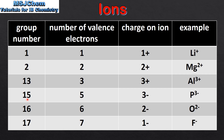An example is the aluminium ion. Next we have group 15. Elements in group 15 have 5 valence electrons. They can gain 3 electrons to form 3- ions. An example is the phosphide ion. Group 16 elements have 6 valence electrons. They can gain 2 electrons to form 2- ions.